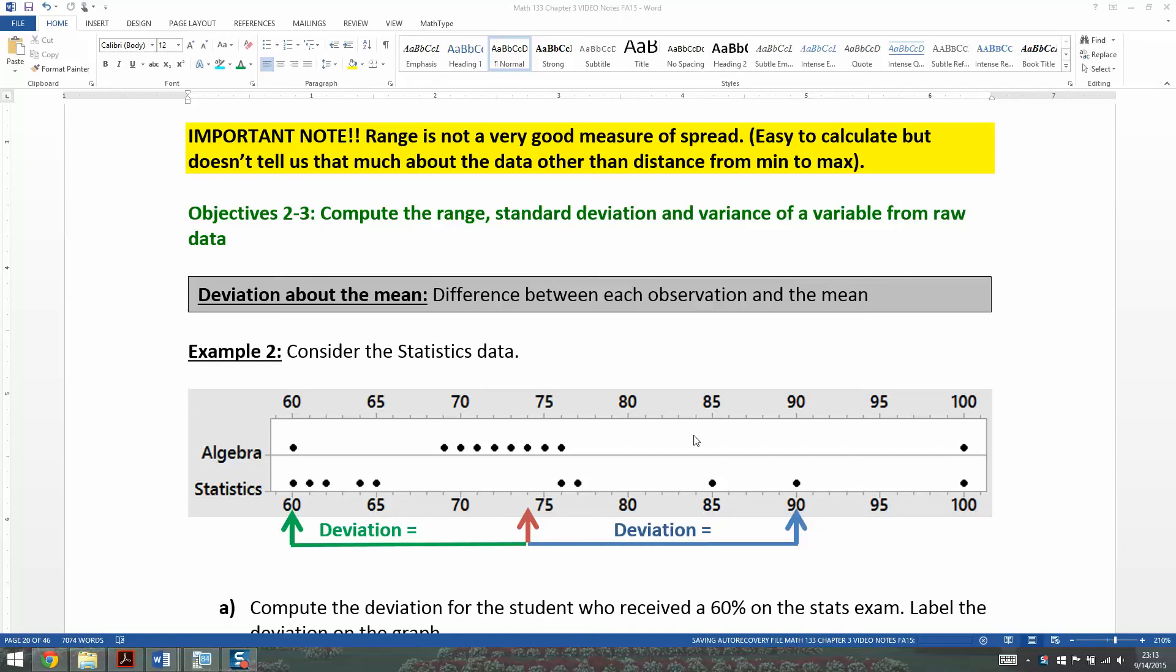We learned in the last video that the range, while easy to find, is not a very fine-tuned measure of spread because all it tells you really is the distance from the min to the max. So we want a different measure of spread, something that will do a better job for us, and that is what standard deviation is, and we're going to build our way to that with a couple examples.